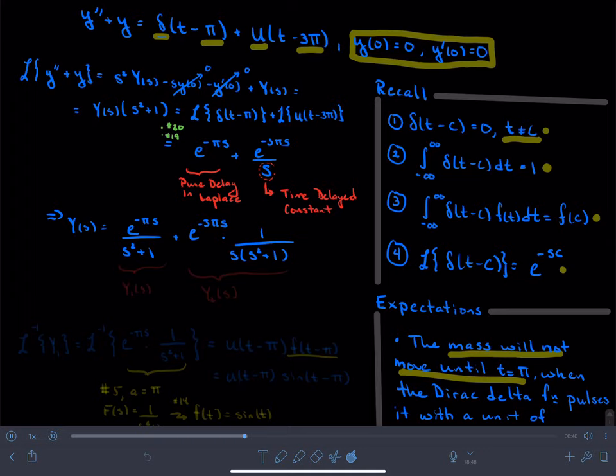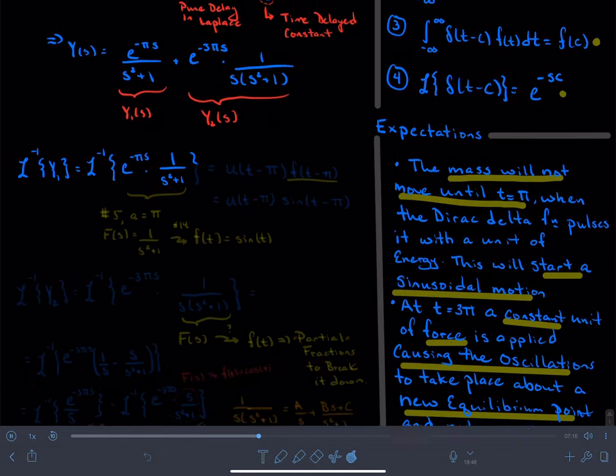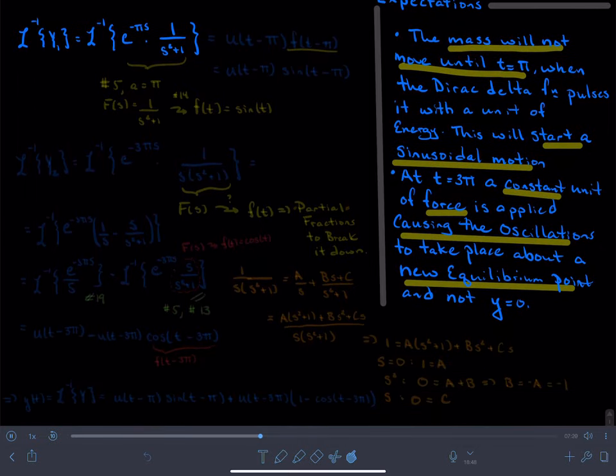So now, if this term, the first term, is equal to capital Y1 of s, the second term here is equal to capital Y2 of s. We want to figure out what is the inverse Laplace transform of capital Y1. Well, that's the inverse Laplace transform of e to the negative pi s times 1 over s squared plus 1.